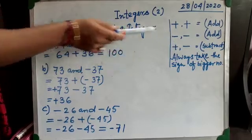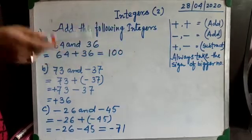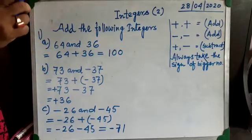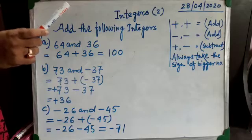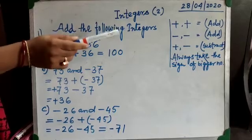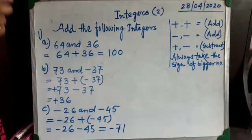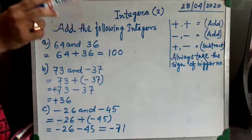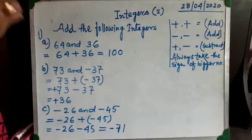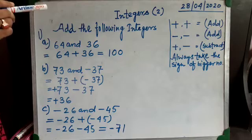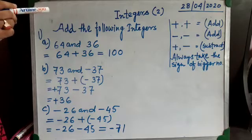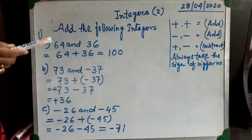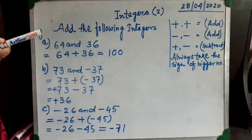But if one integer is positive and another is negative — that means they have different signs — we have to subtract them. After completing the sums, when writing the result, always take the sign of the bigger number. Now let's start the examples.